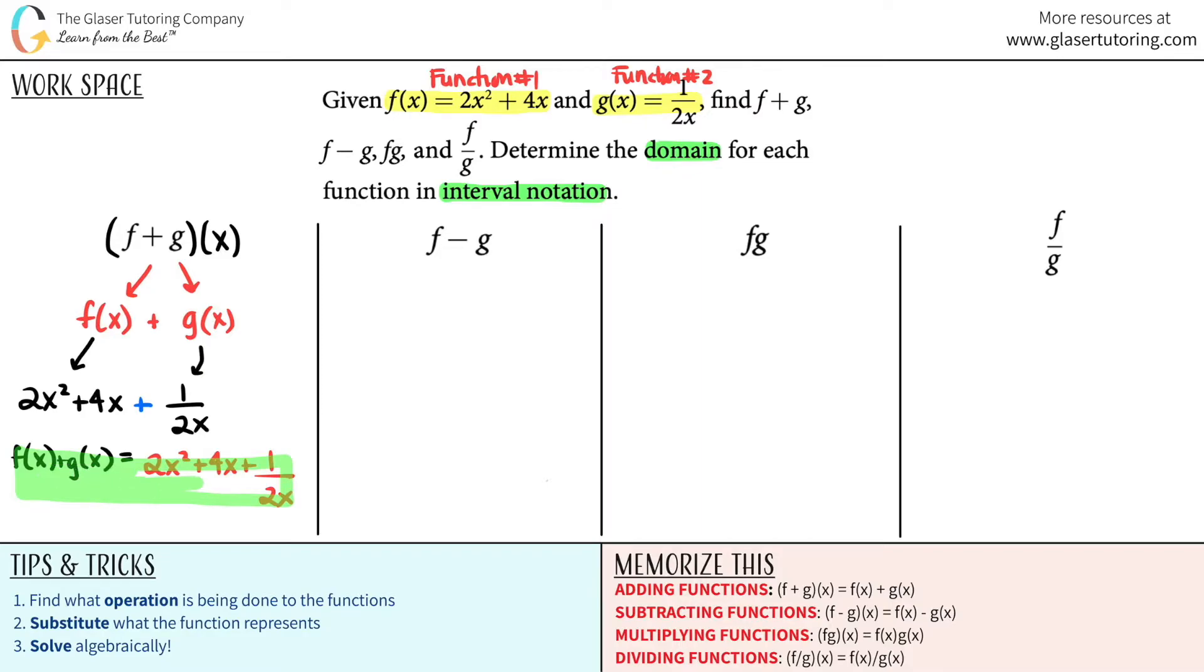Now for the fun part. Now we've got to find the domain. So before I even go into domain, I just want to make sure and reiterate something that whenever you write your first form of your new function when you do the addition, put like a star here because this is the one that you're going to be going off of your domain. Don't take domain values when you start canceling stuff out and simplifying because that's how they get you.